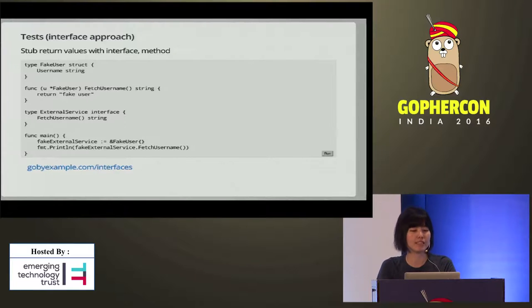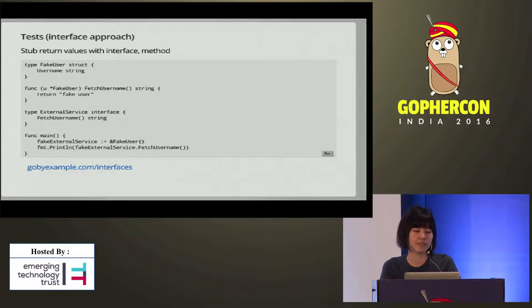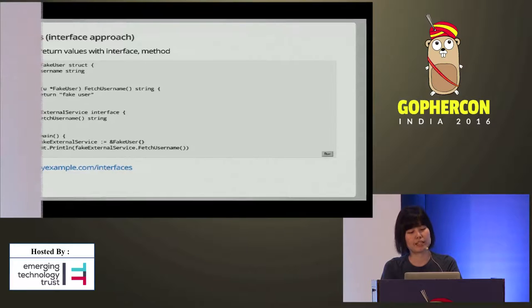There's also another way to test — you might remember this from yesterday's talk. You can use interfaces to stub return values instead of what we did earlier. You define a fake user struct with a username field, declare a method on it to return 'fake user,' and define an interface. If you assign fake user to fake external service, the return value is also changed. A quick comparison: swapping functions is probably useful when you only have a single function, while the interface approach is useful when you have multiple methods that need to be changed for tests.